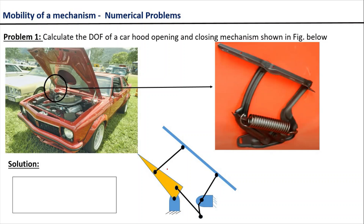To calculate the degree of freedom of this mechanism, we will first start by counting the number of links. We will start naming the links one by one, beginning with the fixed link. We name this fixed link as link 1 — it is a usual convention to name the fixed link as link 1. Then we name the remaining links as link 2, link 3, link 4, link 5, and link 6. So the total number of links in the mechanism is equal to 6.